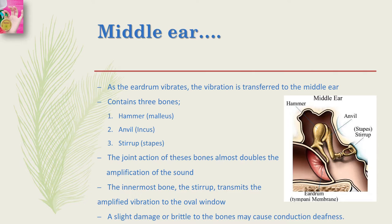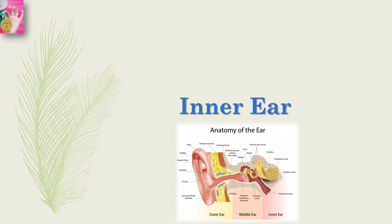The innermost bone, which is the stirrup, transmits the amplified vibration to the oval window. So the hammer, anvil, and stirrup amplify the sound, and then the stirrup transmits the vibration to the oval window. Any damage or brittleness to these bones may cause conduction deafness, which is a problem that normally occurs with age and is treated with hearing aids.